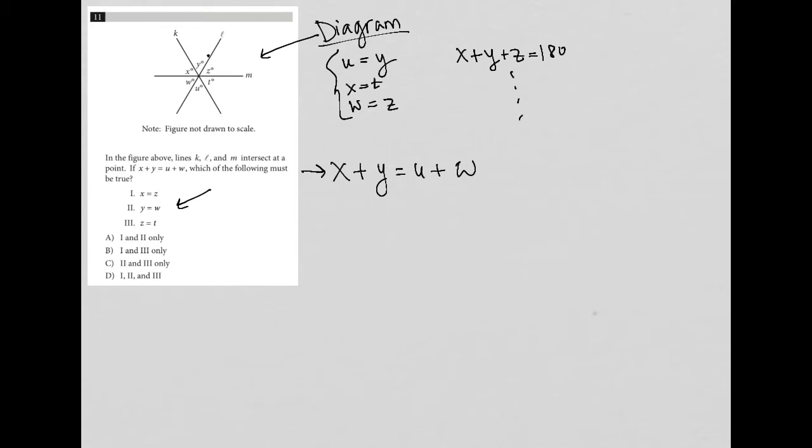So X plus Y is this angle here. U plus W is this angle here. If they're equal to each other, then that would mean that angle Z, which is just the supplement of X plus Y, must be equal to angle T, which is supplement of U plus W. So that's a new thing that I can add in. So Z is equal to T and that I do notice is here. So I'm going to just circle my three here. And because of circling three, I'm going to get rid of choice A because it doesn't have three as an option.